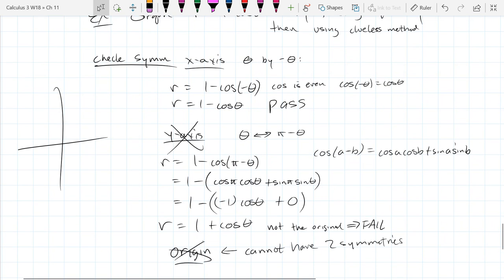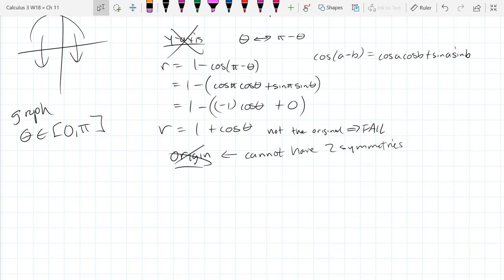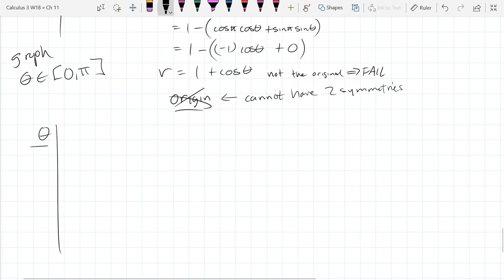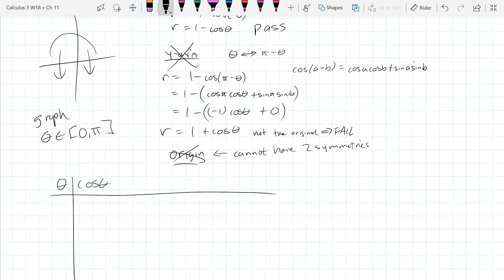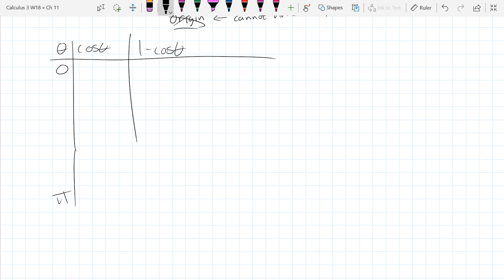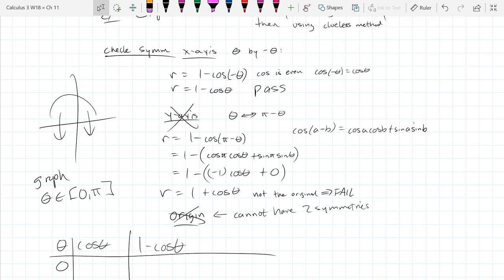So y-axis is out. By default, origin has to not work as well. That's because you can't have two symmetries. We have x-axis symmetry only. So let's keep it easy and go everything above the x-axis, and then we're going to use reflection and flip it over. We're going to graph for thetas in quadrant one and two, zero to pi, and then use symmetry after that. So we'll draw our table. We'll fill it in next class. We'll have theta, cos theta, and one minus cos theta, and we're going to go zero to pi.